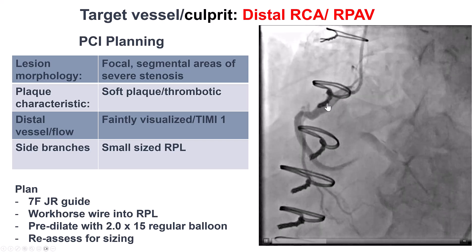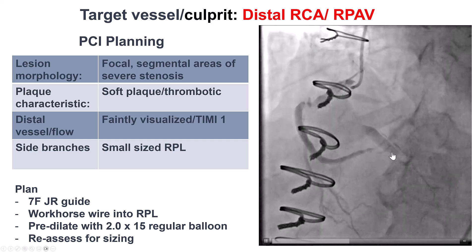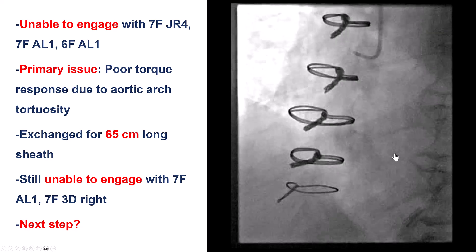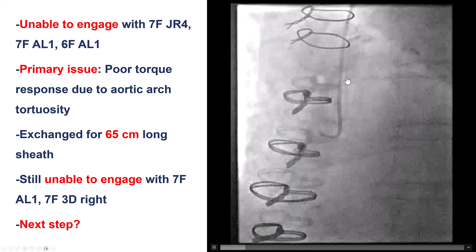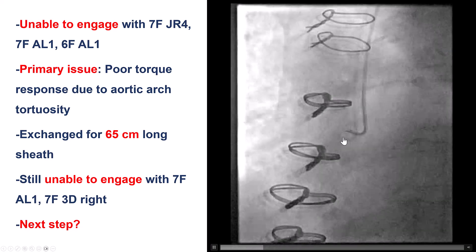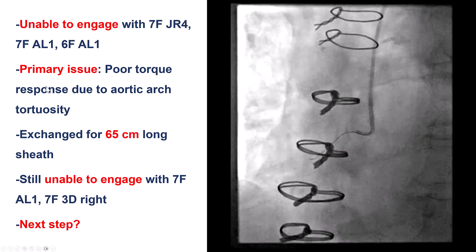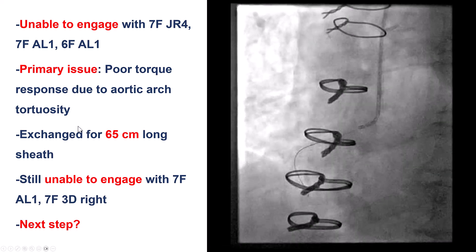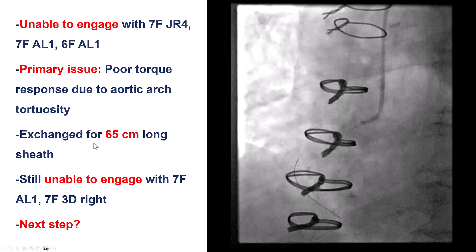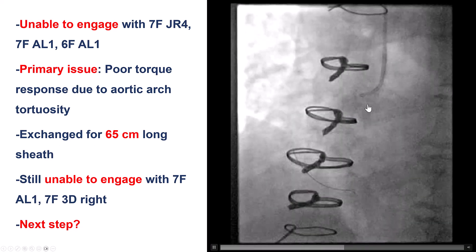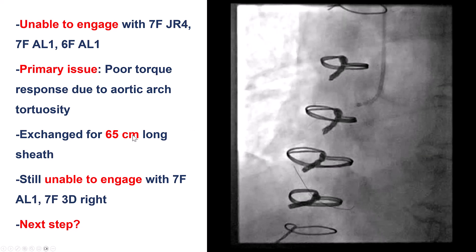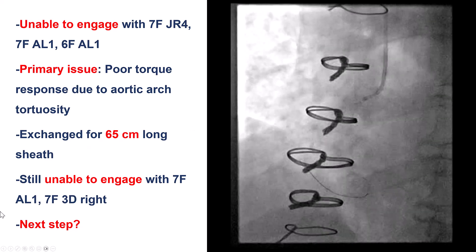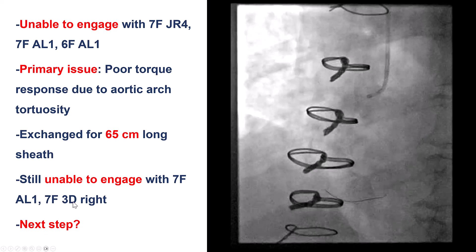So the plan was to perform PCI, engage the RCA, and hopefully put some stents. But we had a lot of problems — manipulation of the catheters was very challenging because of aortic tortuosity. We tried several guides without success. We then upsized to a 65-centimeter long sheath, and still we were unable to engage with an AL-1 or a 3D right catheter.